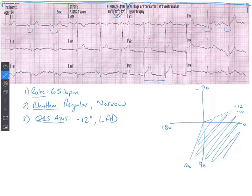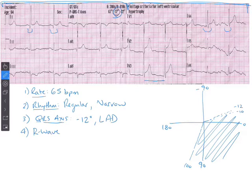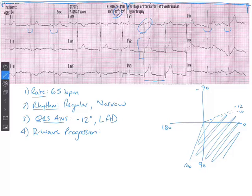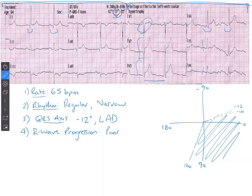Step four is R wave progression. V1 and V2 should be mostly negative — V1 looks good but V2 looks very positive. V3 and V4 are supposed to be biphasic but they are absolutely positive, and so are V5 and V6. So we're going to say we have poor R wave progression. Remember, we look at that to get a 3D view of the electrical health of the heart, and right now it's not looking great.